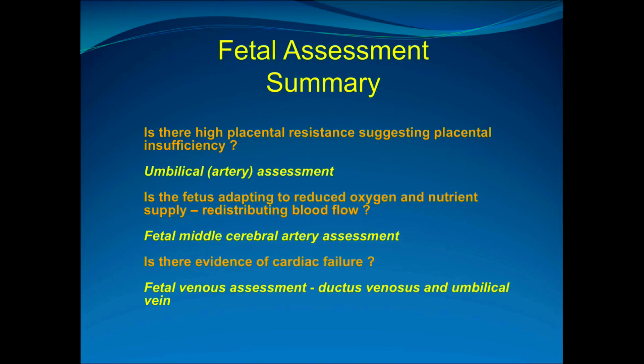To summarise: if we are asking whether we have high placental resistance suggesting placental insufficiency, we look at the umbilical artery. That shows us what the placenta is doing. If there is indeed increasing resistance and placental insufficiency, we then need to see how the baby is reacting. Is the fetus adapting to the reduced oxygen and nutrient supply by redistributing its blood flow? We answer that question by looking at the fetal middle cerebral artery.